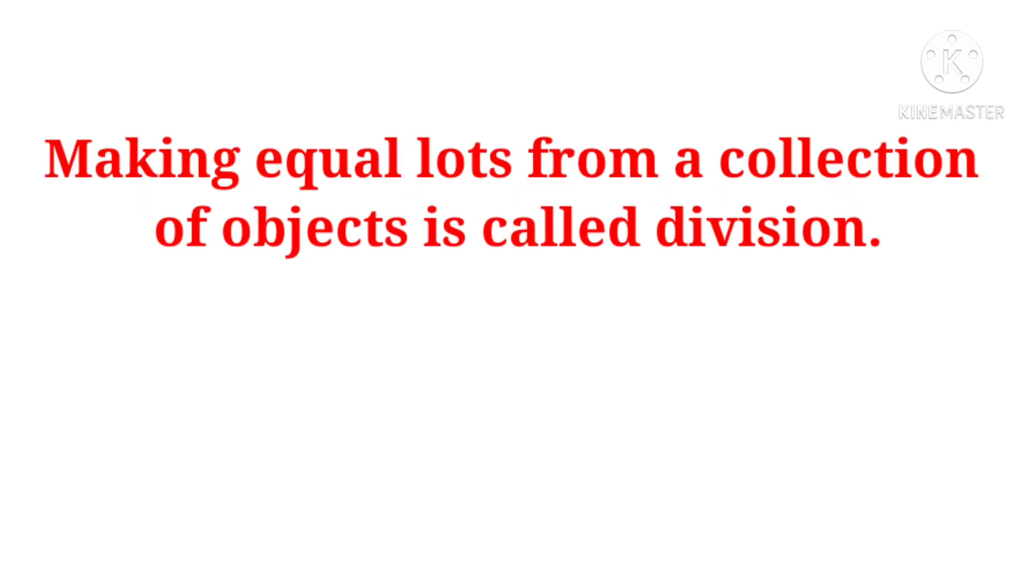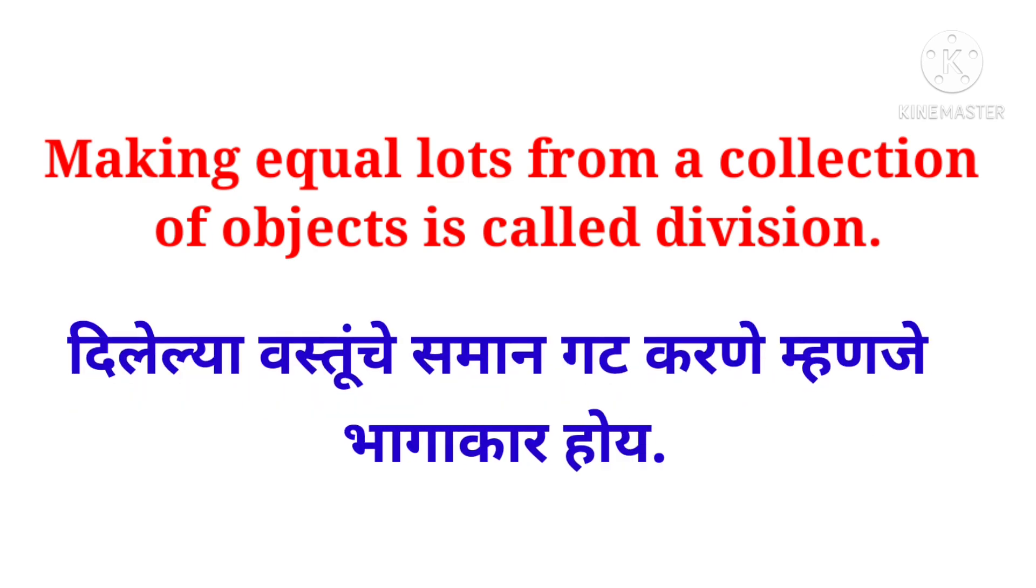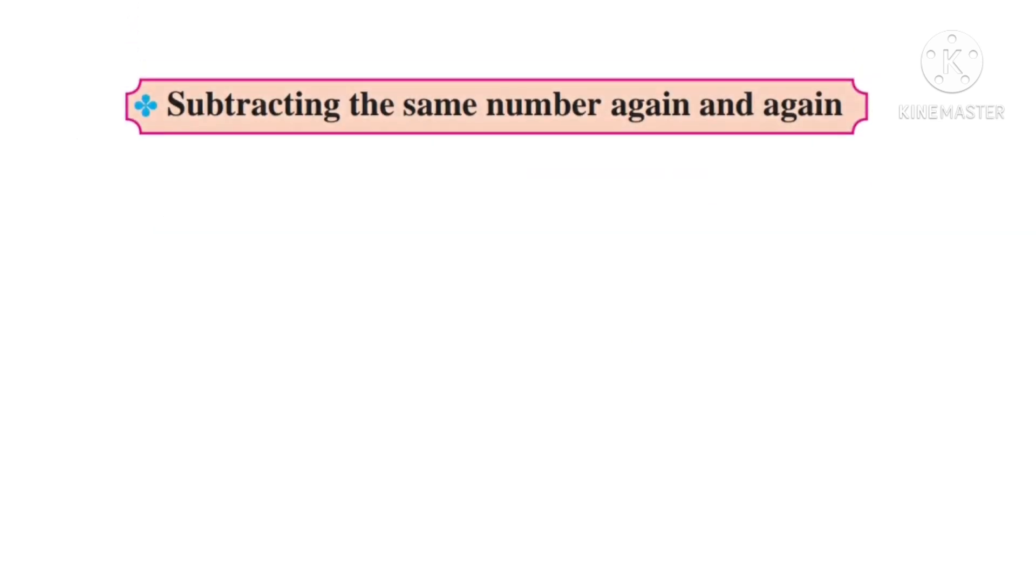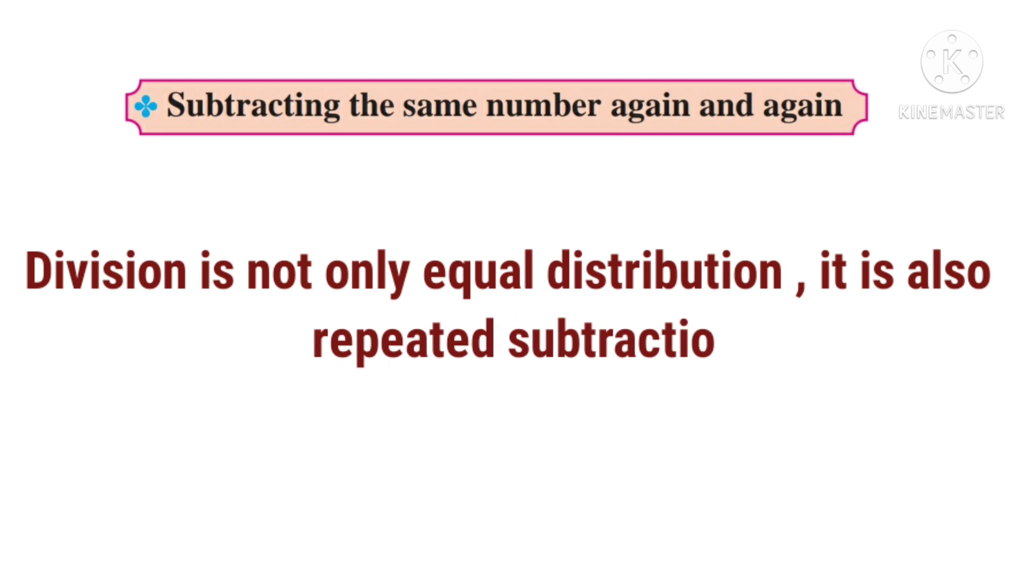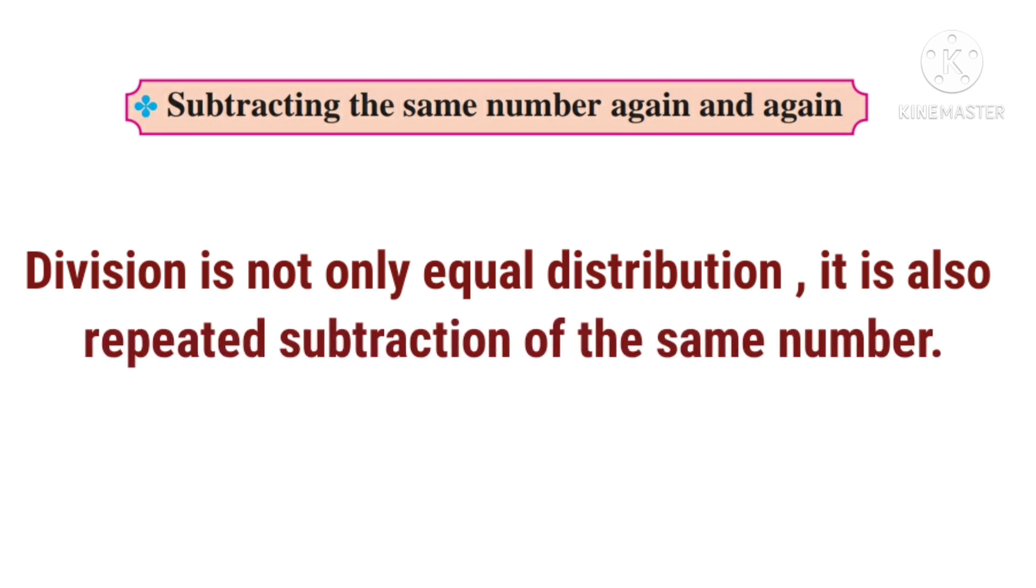So students, we learned that making equal lots from a collection of objects is called division. Division is not only equal distribution, it is also repeated subtraction of the same number.